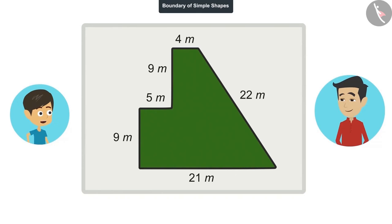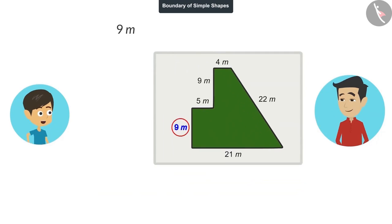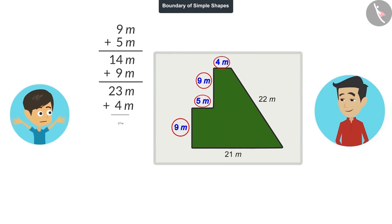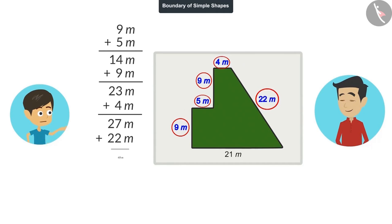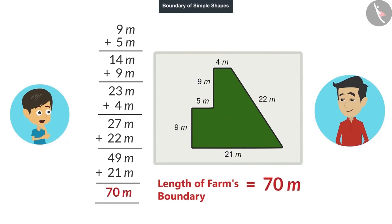Okay, this farm has six sides. By adding all of these I can find the length of the field's boundary. 9 meters added to 5 meters is 14 meters. 14 meters added to 9 meters is 23 meters. 4 meters added to 23 meters is 27 meters. 27 meters added to 22 meters will be 49 meters. 49 meters added to 21 meters is 70 meters. That means the length of our farm's boundary is 70 meters.